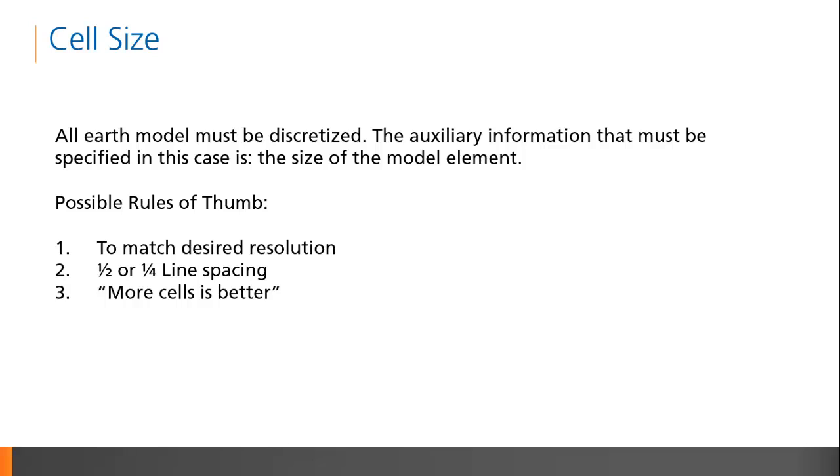There are a number of rules of thumb that have been used by inversion scientists. One idea was to choose a cell size that matched the desired resolution. That is, I want to resolve 5 meter bodies, so I will choose a 5 meter cell size. Which is not an unreasonable thing to say, but it's not that simple. What about the ability for the survey method to resolve 5 meter bodies in the first place? And what about the geometry of the survey?